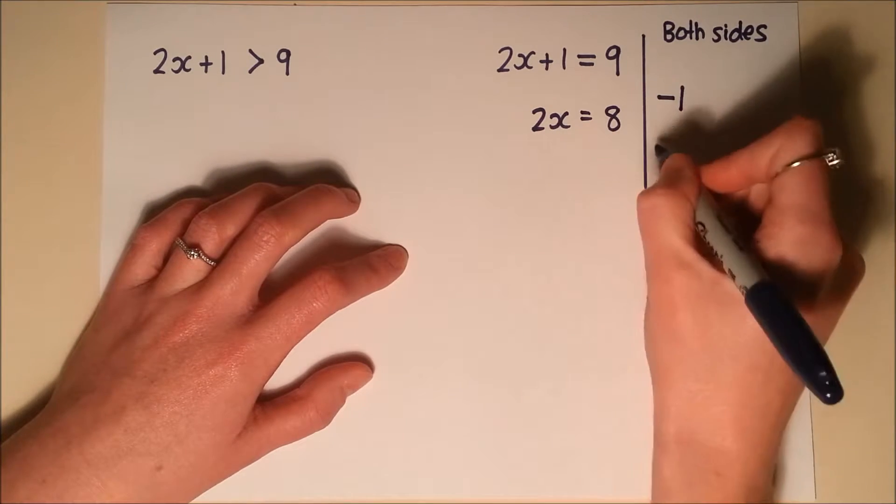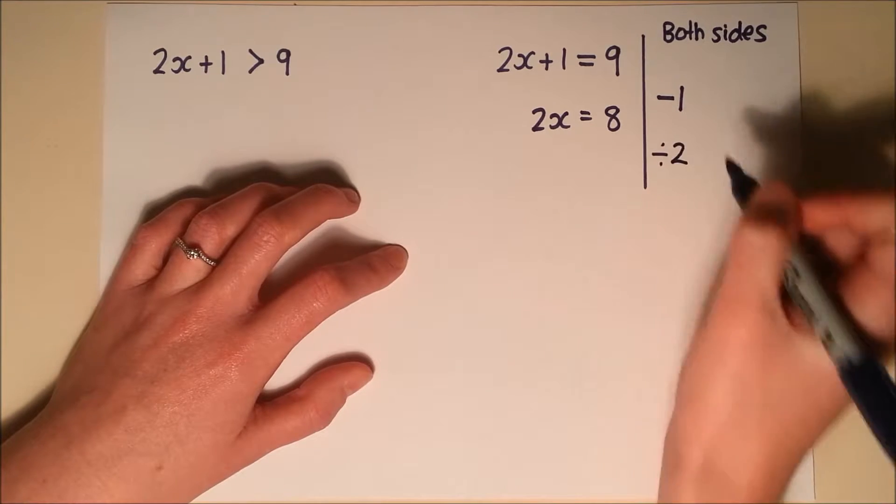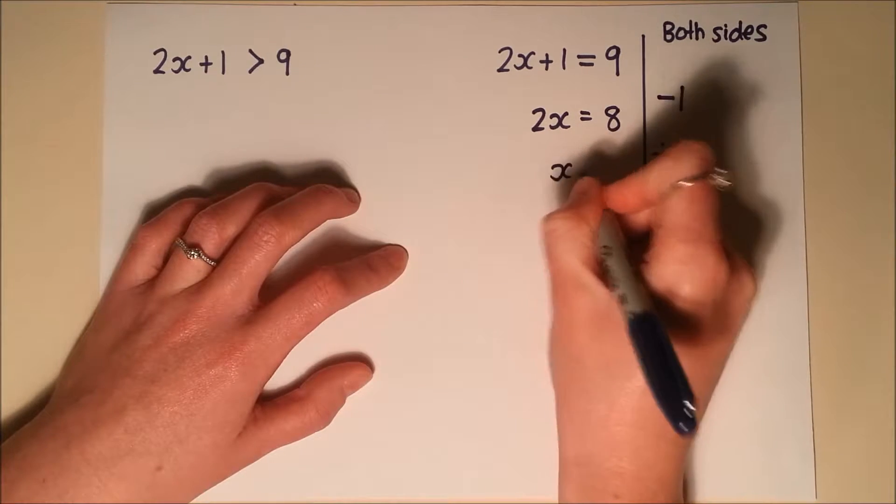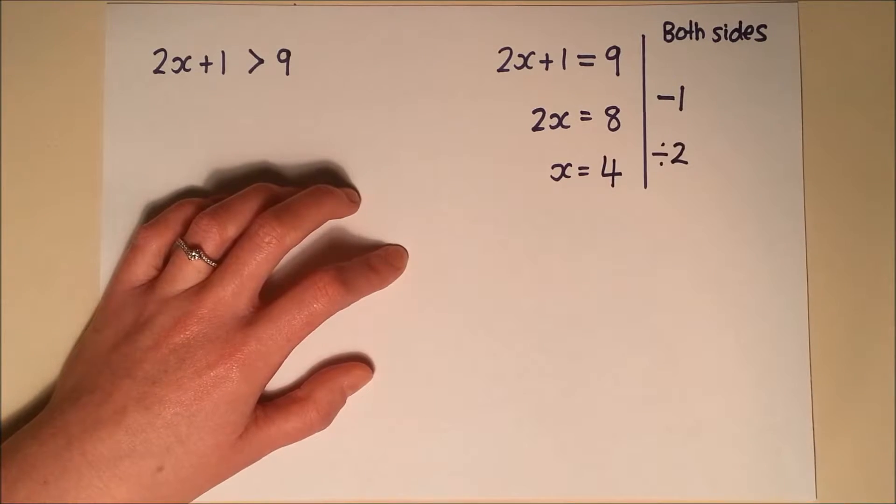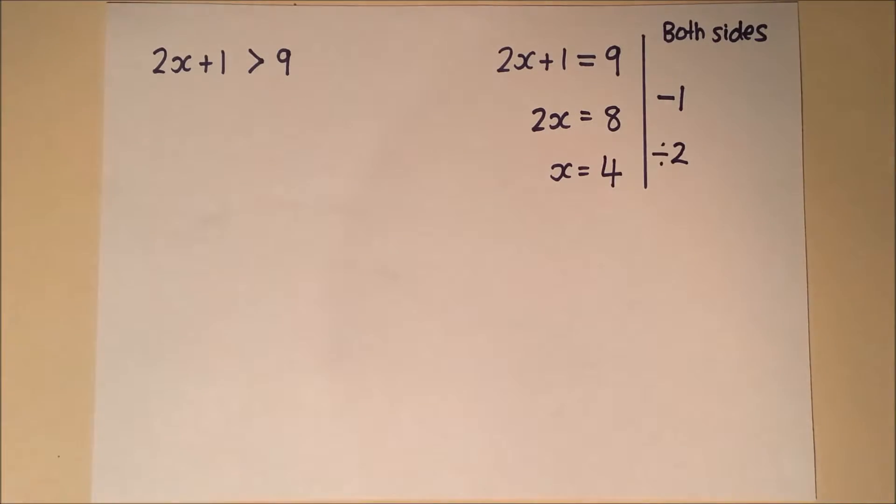I've then got 2x equals 8. So to undo multiplying by 2, I divide both sides by 2. x equals 8 divided by 2, which is 4. So that's a solution to a normal equation.